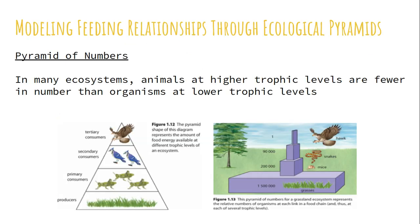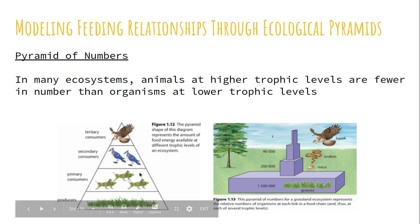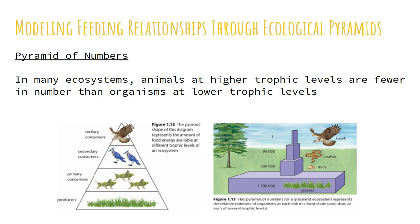When it comes to depicting energy transfer, we look at the pyramid of numbers. In ecosystems, we can show a numbers pyramid by drawing the lowest trophic level on the bottom in the biggest box, going all the way up to a small triangle with the highest trophic level at the top. The reason for this design is that you tend to have way more grass than you do hawks. So there's so much grass, so many mice, so many snakes, and one hawk — as you go up the food chain, there's less and less.